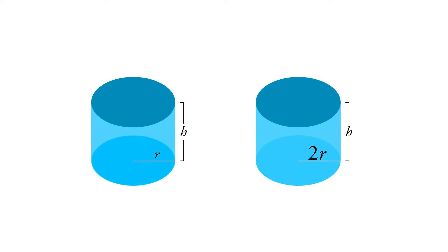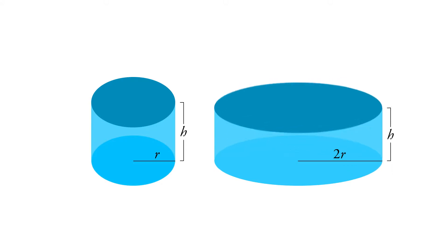So what we're doing here is we're taking a can like this size and we're doubling the radius. But when we double the radius, we want to have the same volume, so we're going to have to shrink the height.